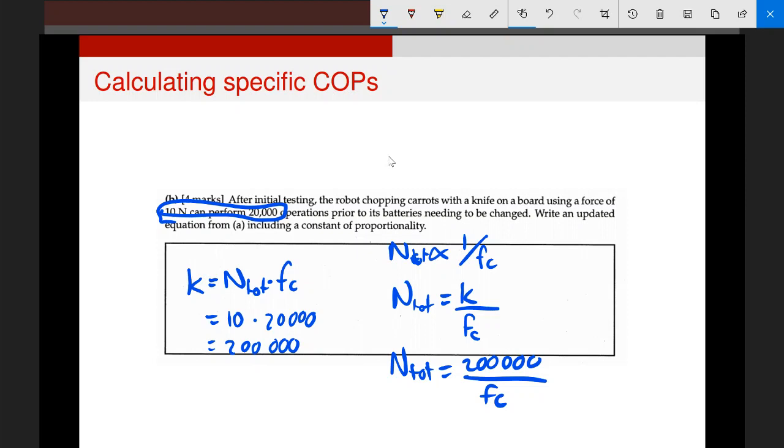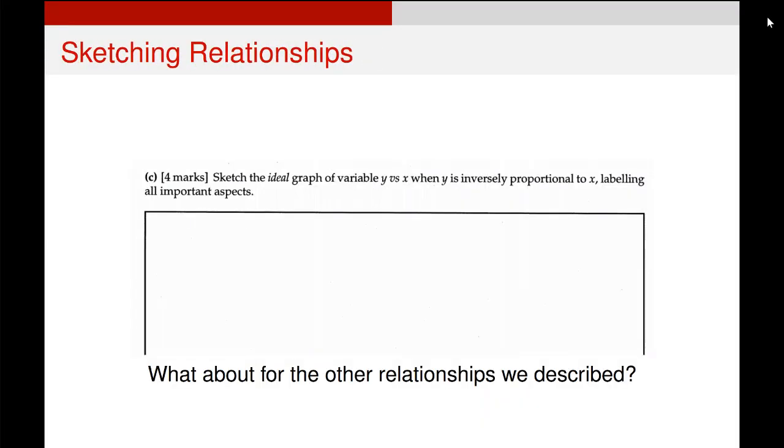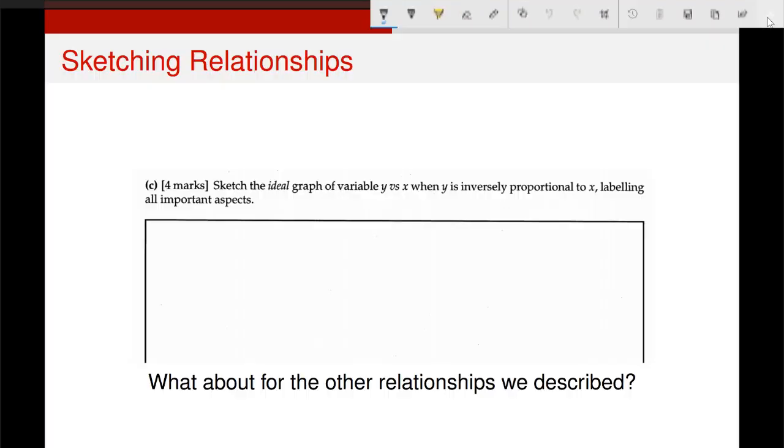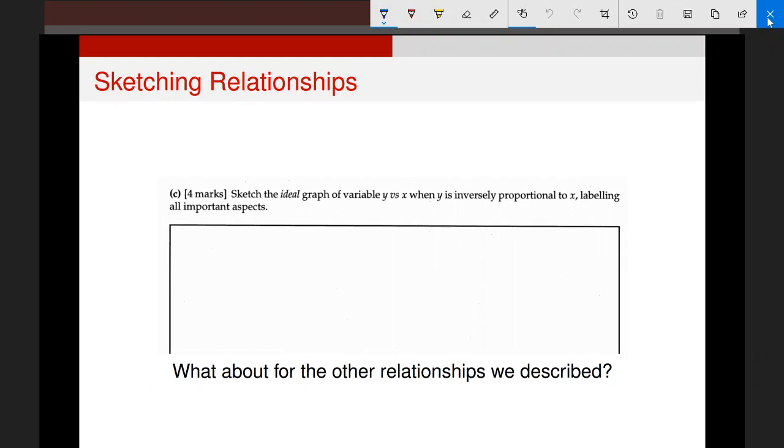Now we've gone from a general relationship to a general equation to a specific equation. That's the kind of thing that you should be able to do if you're given enough information, or if you go out into the field and actually do some experiments to find some of these bits of information out. So the final kind of question you might get is sketch an ideal relationship. There's a few different ways of answering this problem.